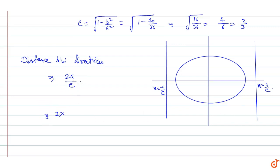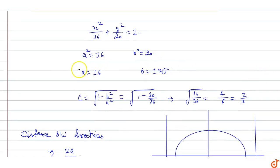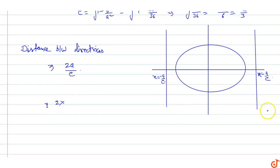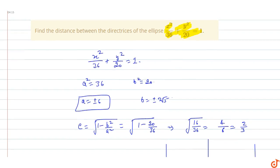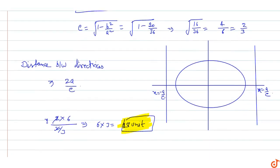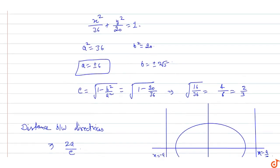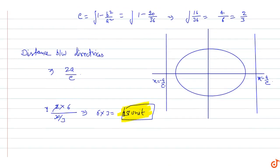The distance between the directrices = 2a/e. Here the semi-major axis a = 6 and eccentricity e = 2/3, so distance = 2 × 6 / (2/3) = 6 × 3 = 18 units. Therefore, the distance between the directrices of the ellipse x²/36 + y²/20 = 1 is equal to 18 units.